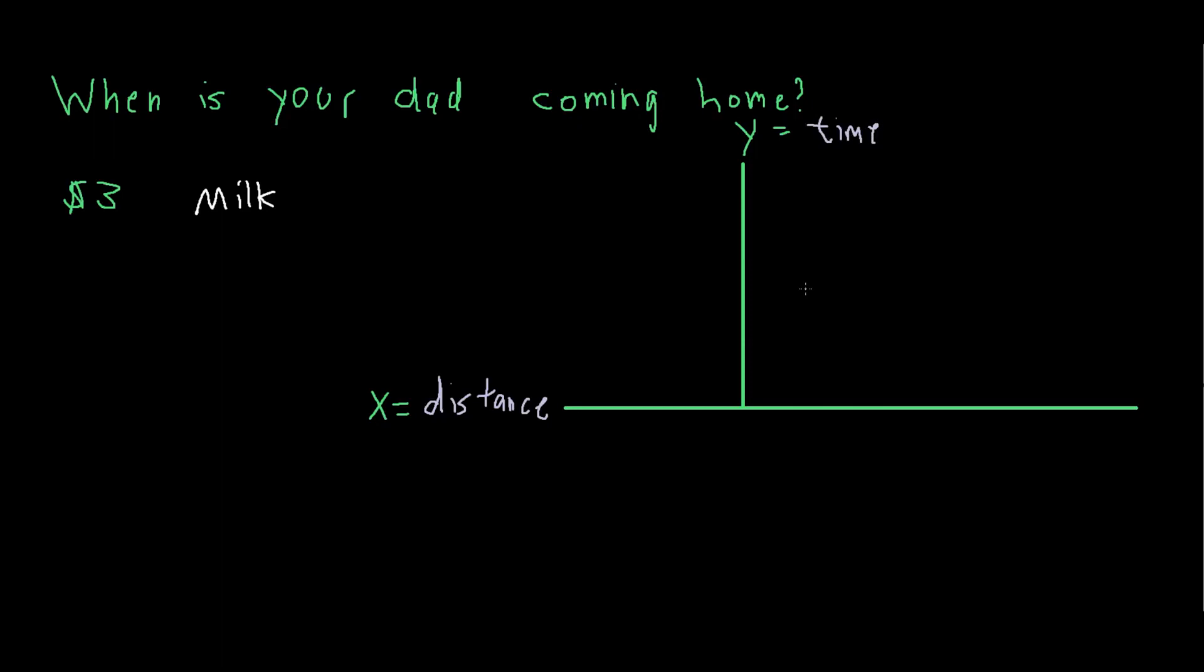Now one point of confusion for people doing this problem is that usually the x-axis is the one that defines time. However, in this case, the y-axis represents time, because I am Asian and I get to make the math rules. I am Asian.